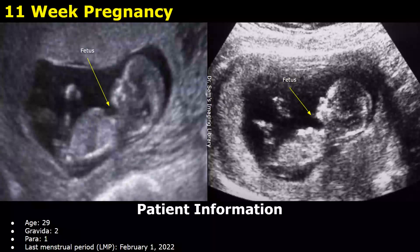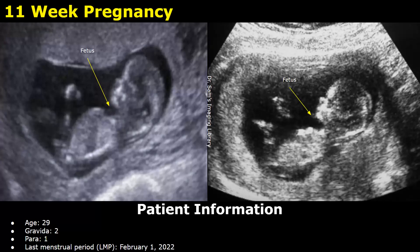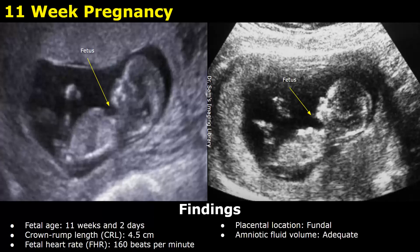Here is an 11-week pregnancy. This is the patient information: age 29, gravida 2, which means this is the second pregnancy, para 1, which means the patient had one delivery before this pregnancy, and this is the LMP. In the findings, you can write the fetal age, the crown-rump length, the fetal heart rate, placental location, and amniotic fluid volume.